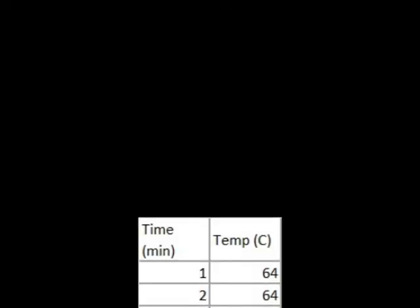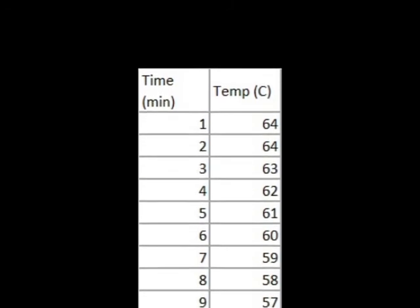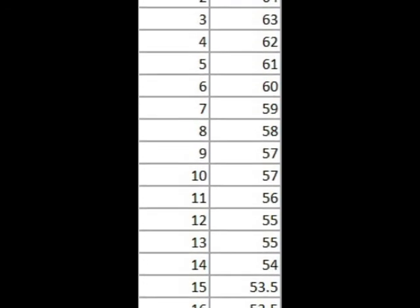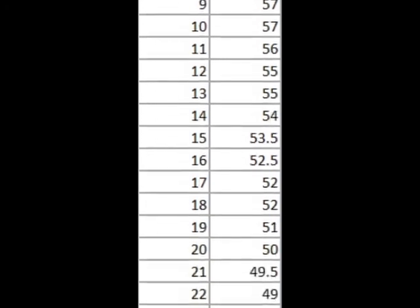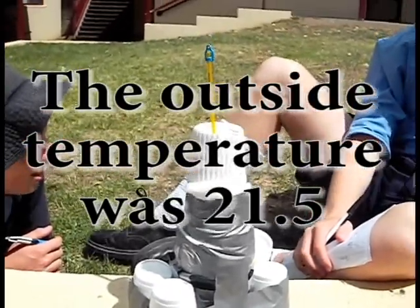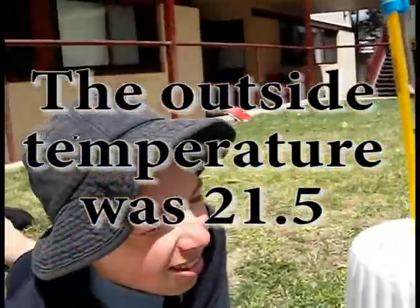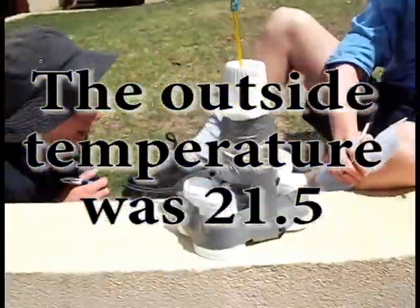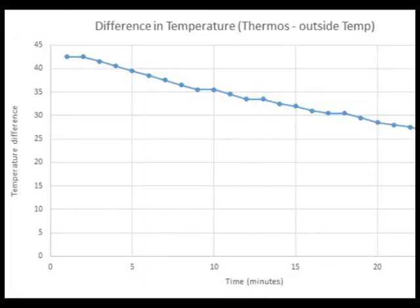Analyzing your data: you need to produce a graph of how the temperature difference between the hot water inside your thermos and the air outside your thermos varies with time. To get the temperature difference you need to subtract the recorded room temperature from each thermos reading. Plot the data and construct your graph using Excel.